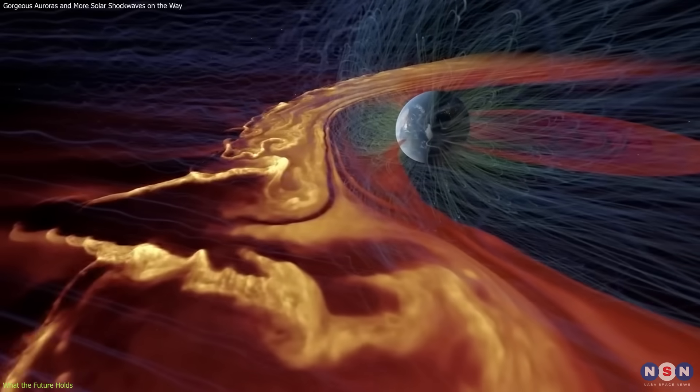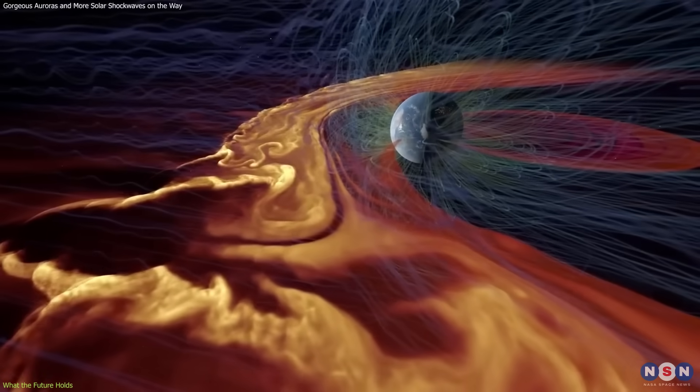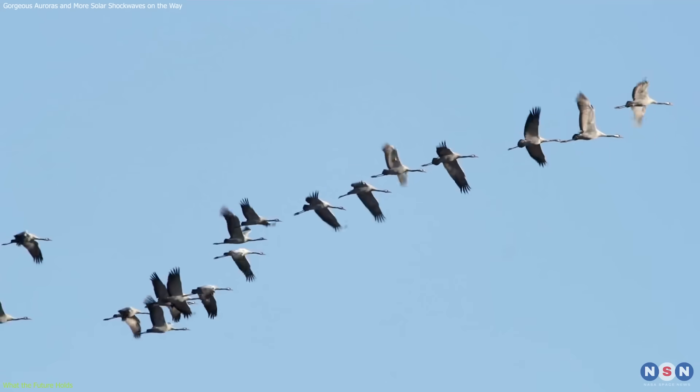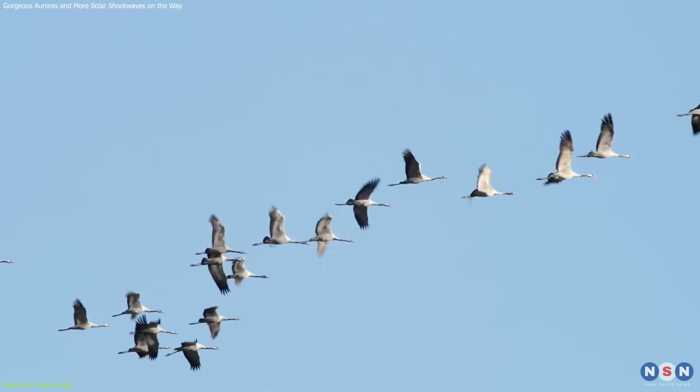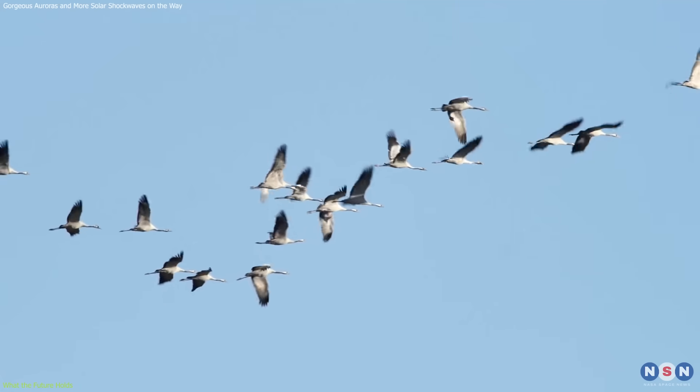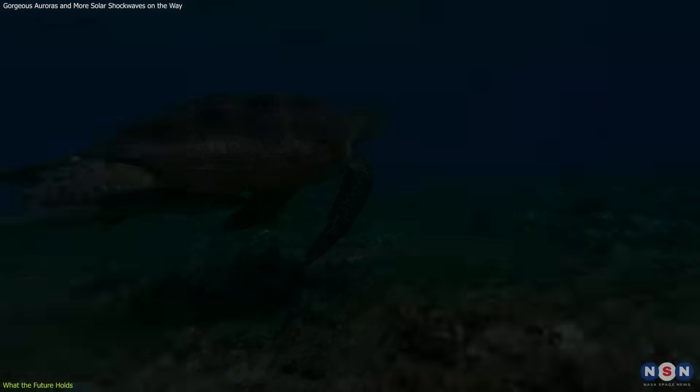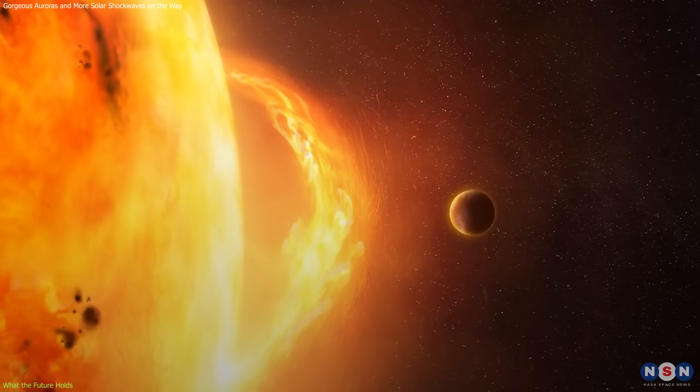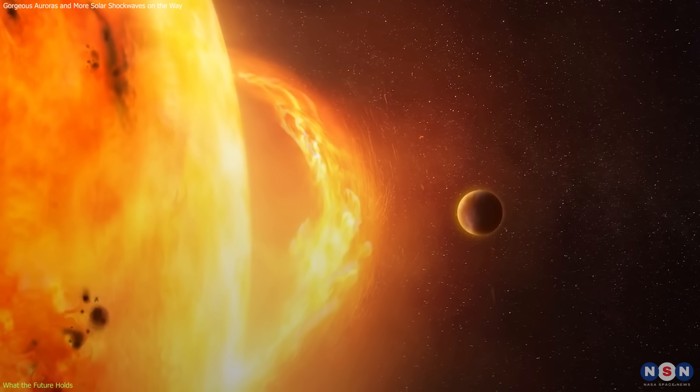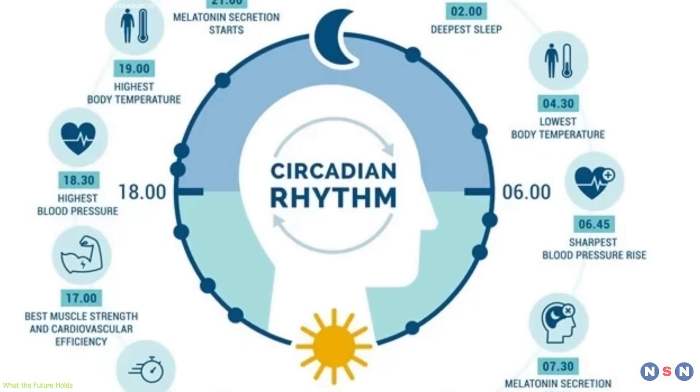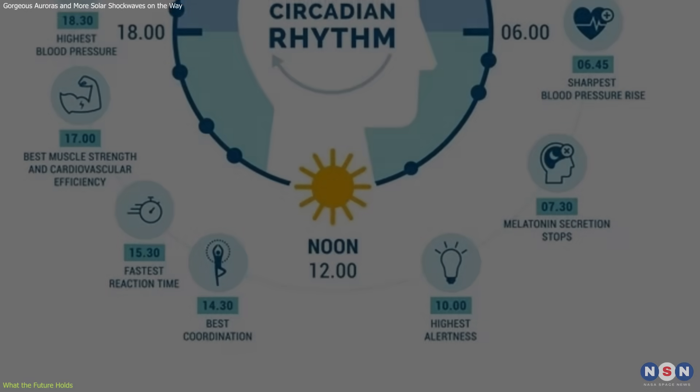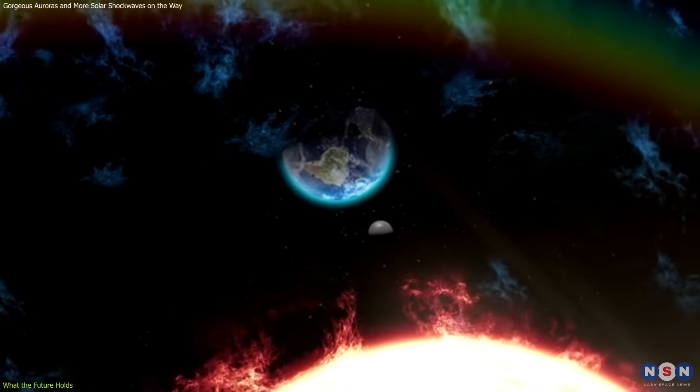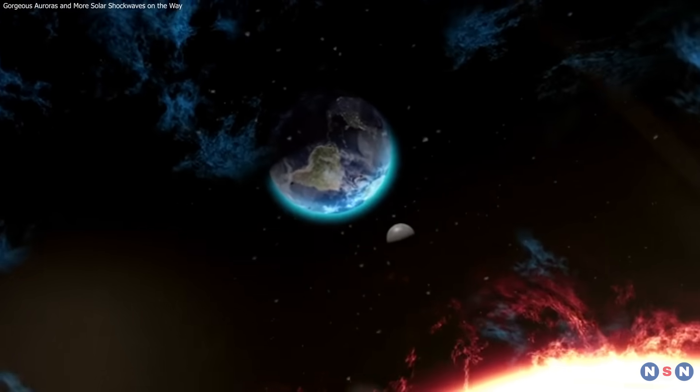Moreover, these geomagnetic disturbances influence the natural world. Animals that rely on Earth's magnetic field for navigation, such as migratory birds and sea turtles, may experience disorientation during severe solar storms. There is also ongoing research into how variations in geomagnetic activity could affect human circadian rhythms and overall health, emphasizing the far-reaching implications of solar activity on terrestrial life.